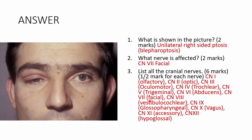CN VII: facial — innervates muscles of facial expression and provides sensory innervation to the anterior two-thirds of the tongue. CN VIII: vestibulocochlear — balance (vestibular apparatus) and hearing (cochlea). CN IX: glossopharyngeal — muscles of the mouth and pharynx. CN X: vagus — innervates many organs; 'vagus' means wanderer, starting in the brainstem and traveling through the body. CN XI: spinal accessory. CN XII: hypoglossal.